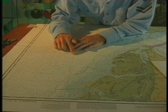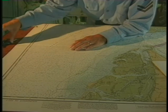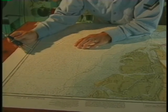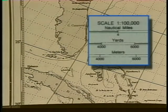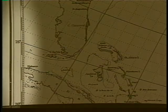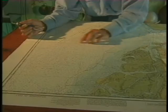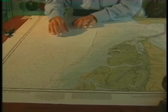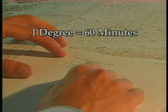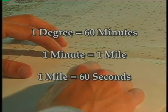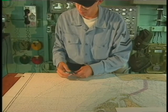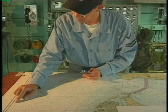Measuring distance is one of the principal uses of charts. This task is accomplished with the aid of a pair of dividers. You will find distance scales in yards, miles, or meters printed in the chart margins. Distances can also be measured using the latitude scales at either side of the chart. One degree of latitude equals 60 minutes, and each minute equals one nautical mile. Therefore, one mile can be divided into 60 seconds. When measuring distances, you always use the latitude scales.